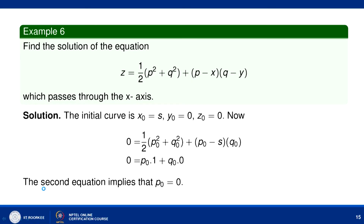We need to find the solution of the equation z = ½(p² + q²) + (p - x)(q - y), which passes through the x-axis. First, with the given data we find the initial curve. Since the data specifies that the integral surface passes through the x-axis, we parameterize the initial curve as x₀ = s, y₀ = 0, z₀ = 0, where s is a parameter.